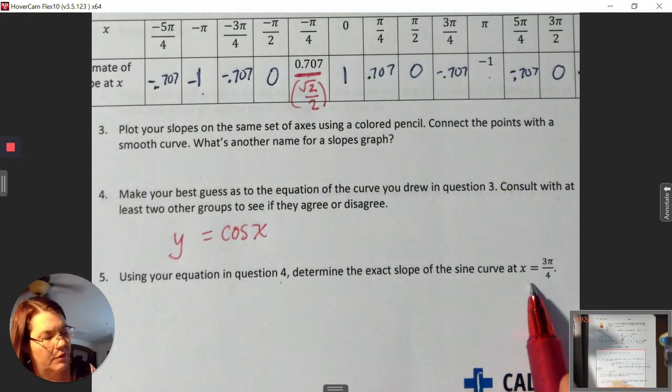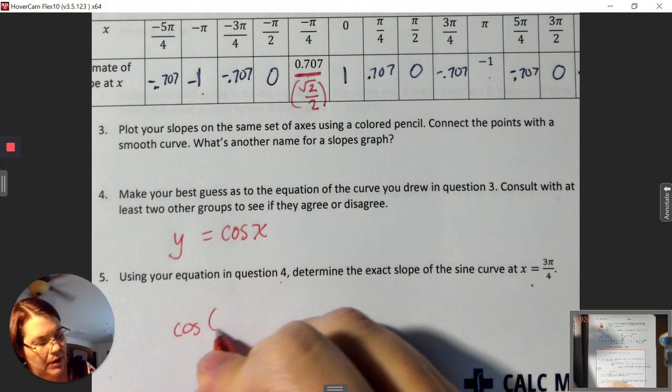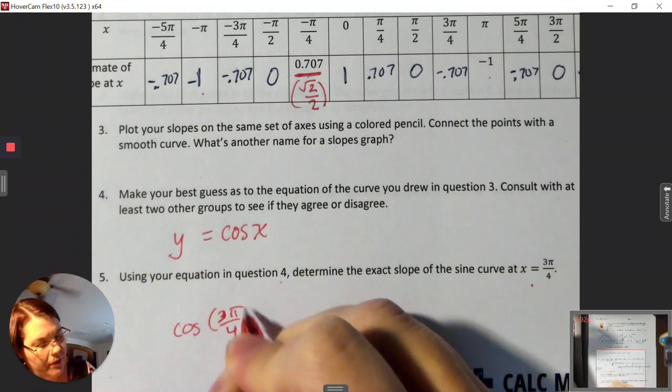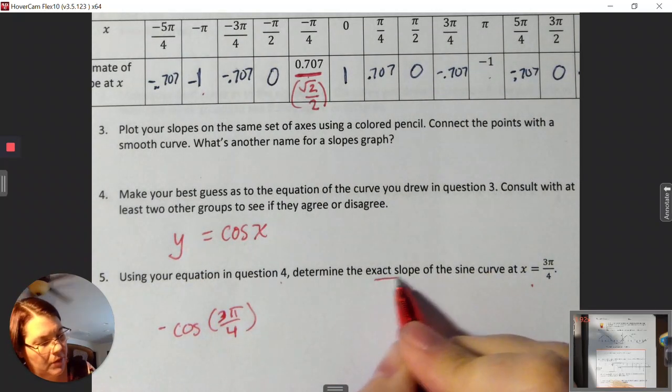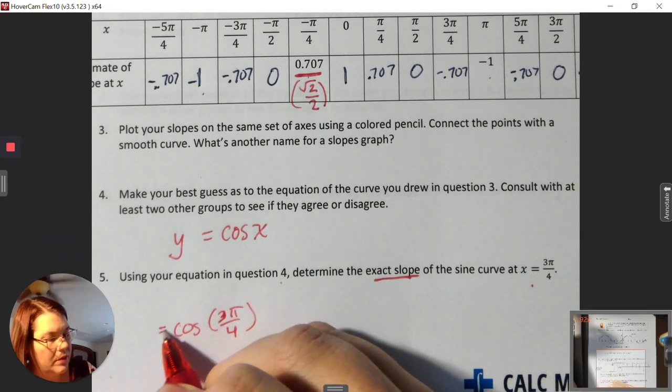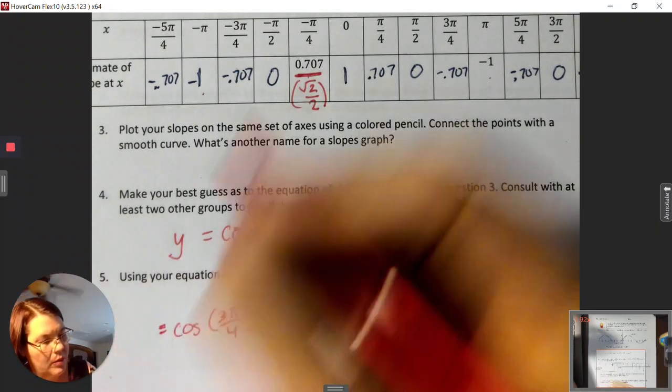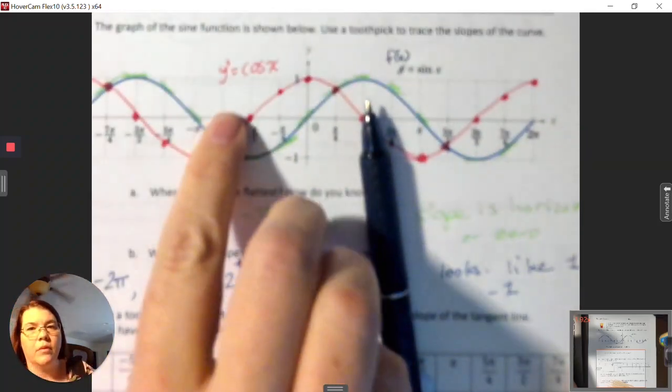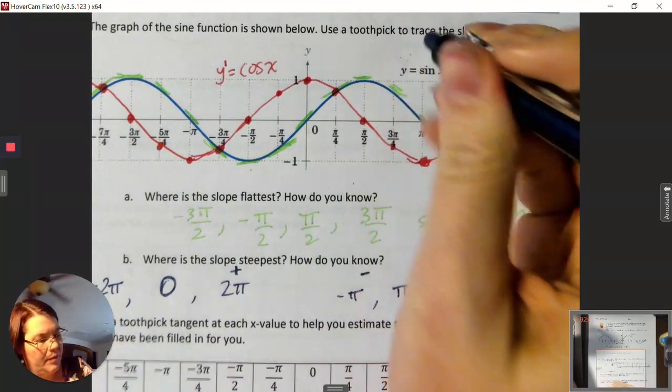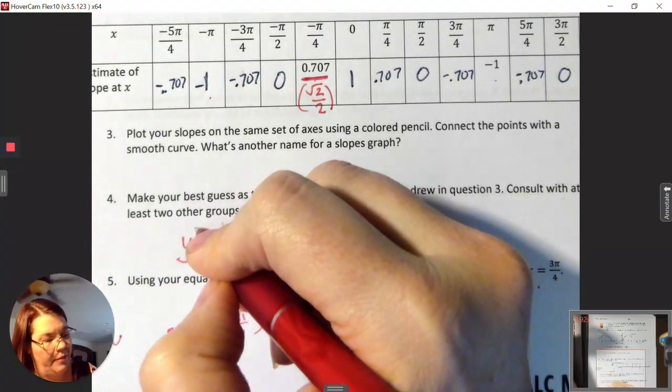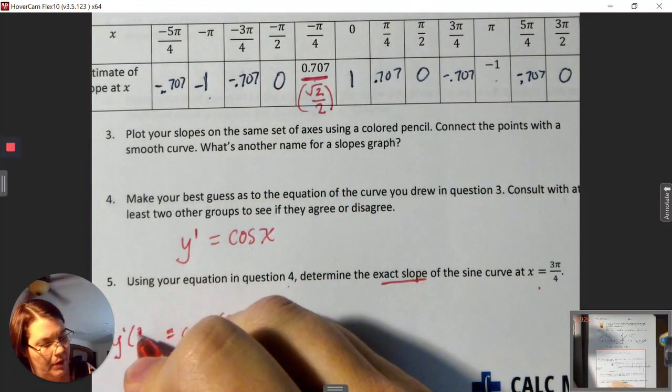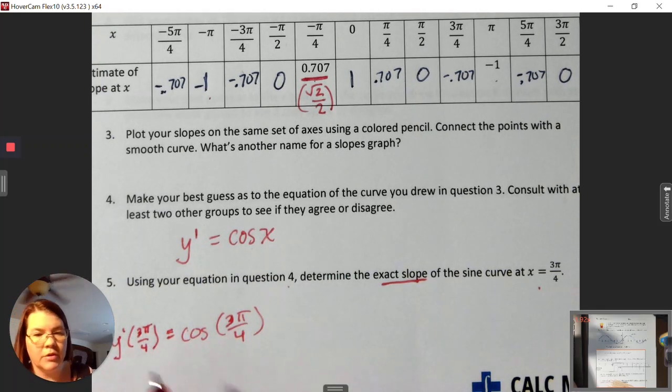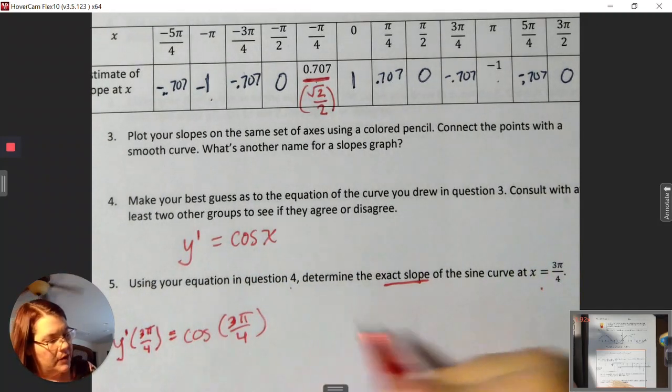Using your equation, determine the exact slope of the sine curve. We need to know what the cosine is at 3 pi fourths, which will give me the slope of the sine curve. We're going to call the derivative y prime.